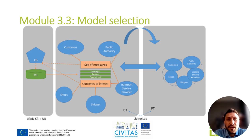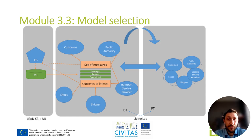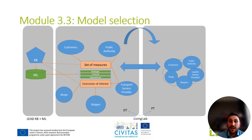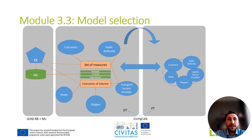The first step before selecting any model is to understand what we want to do with it. In the case of the Digital Twin and the Living Labs, the customers, the public authority, the transport service providers, the shippers, the shops, and all the relevant stakeholders get together to gather the set of measures they want to take — measures or policies — and to obtain certain outcomes of interest, which are the KPIs. As a user of the Digital Twin, you have to select the models that are able to reflect the objectives of the stakeholders and translate them into models that can provide outcomes on which stakeholders can make decisions on policy in order to maximize their objectives.